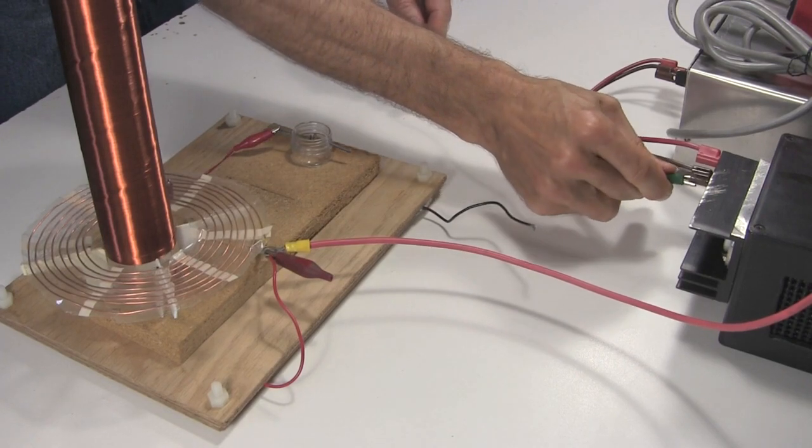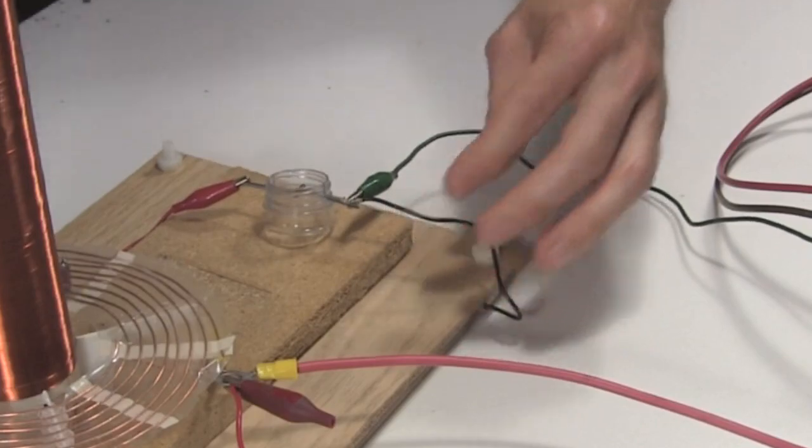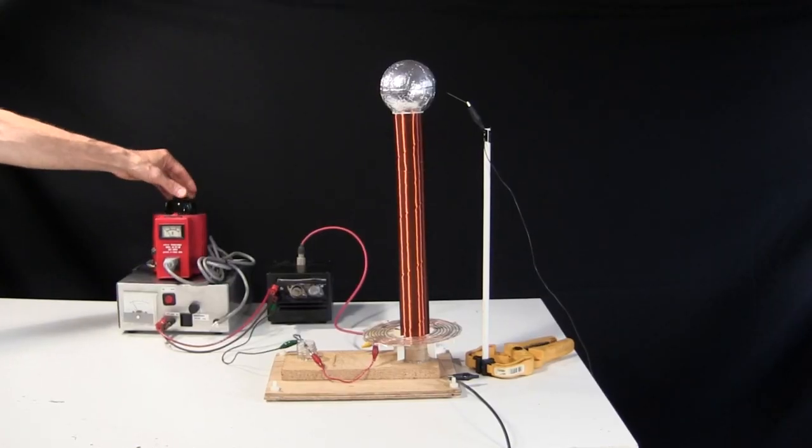Then using a wire going to ground, or power supply negative, I connect one end of the spark gap to the black wire of the capacitor. I turn it on, and turn it up.